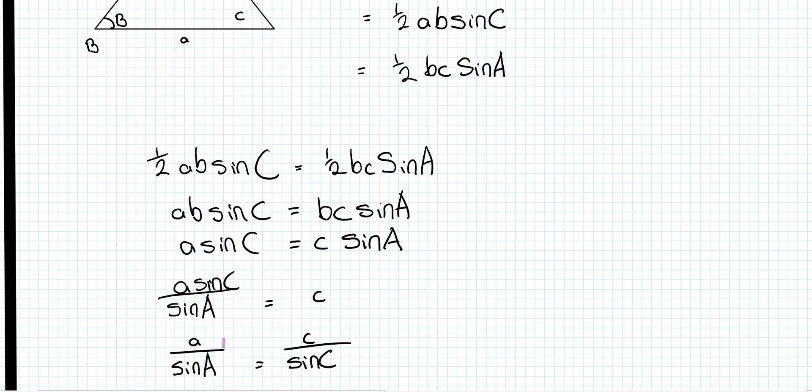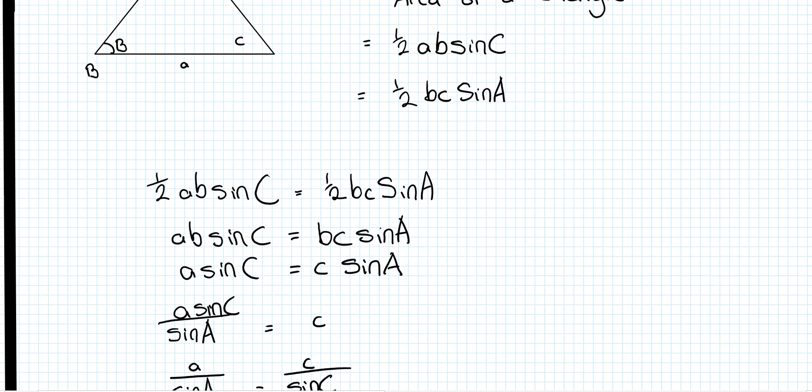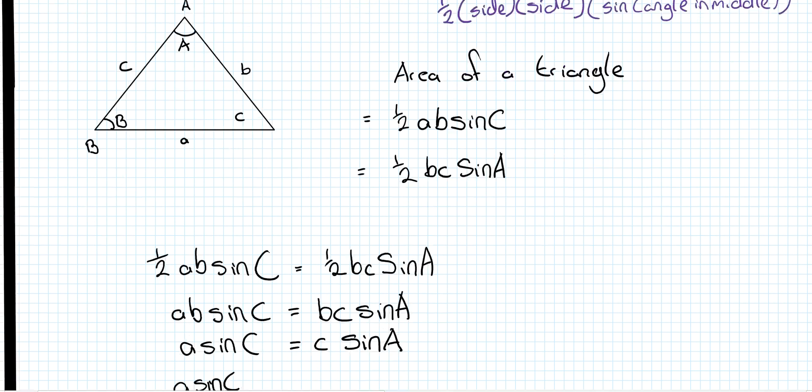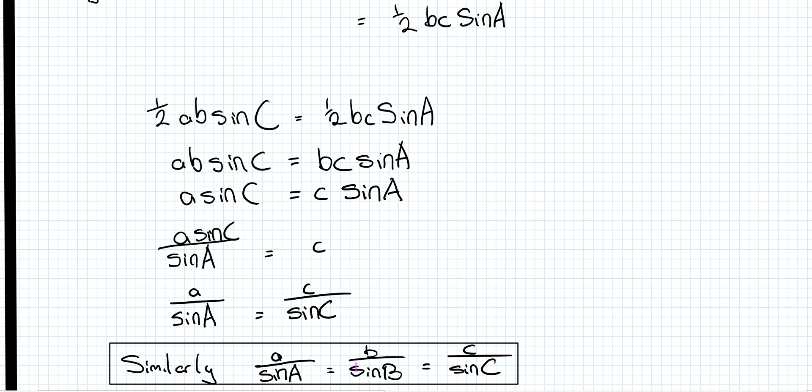And that's the proof done. I've gone and proved that A over sine A is equal to C over sine C. But how do we deal with this bit in the middle? Well very simply, we just say similarly, A over sine A would equal to B over sine B is equal to C over sine C. And that's the proof done.